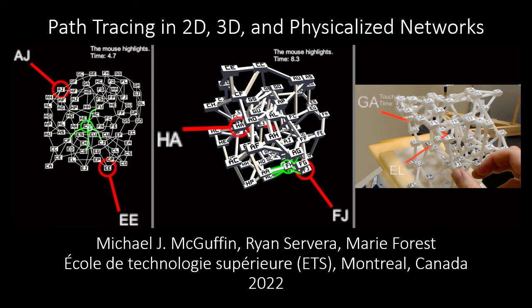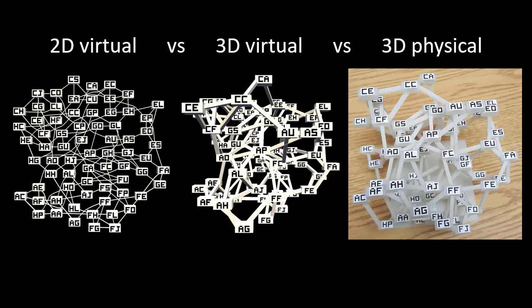A common view within the information visualization community is that 3D should be avoided for presenting abstract datasets such as networks. However, previous work has found that finding the shortest path between two nodes in a network is easier in 3D than in 2D. We conducted two studies of this task under new conditions to extend this previous work. Our studies compared 2D and 3D virtual layouts and also physical 3D printouts of networks.